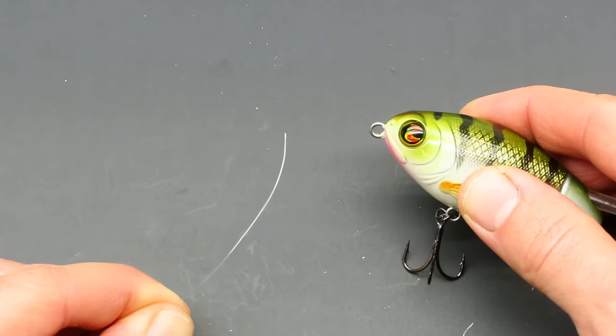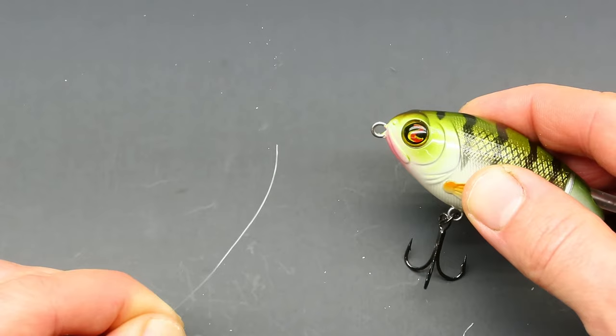Today we're talking about the modified uni knot which was really developed for use with braided lines because they're more slippery and they tend to slip out of some other knots.